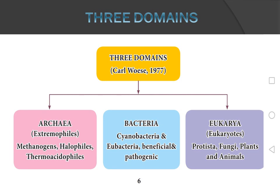This three-domain system was given by Carl Woese in the year 1977. He classified all flora and fauna under three different categories: Archaea, Bacteria, and Eukarya. Archaea includes methanogens, halophiles, and thermoacidophiles. Bacteria includes cyanobacteria, beneficial bacteria, and pathogenic bacteria. Eukarya includes Protista, Fungi, Plantae, and Animalia.